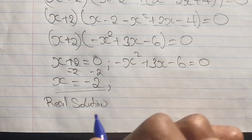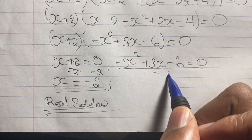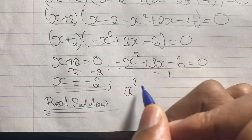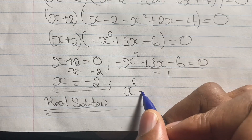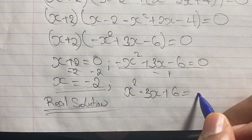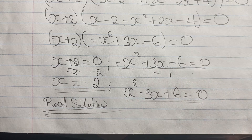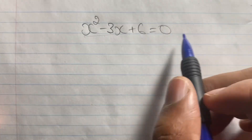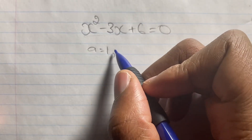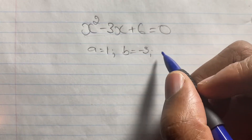Now we look at the quadratic equation. We simplify it by dividing through by negative 1 to remove the negative from x squared, giving us additive inverses: x squared minus 3x plus 6 equals 0. Applying the quadratic formula, we identify a equals 1, b equals negative 3, and c equals positive 6.